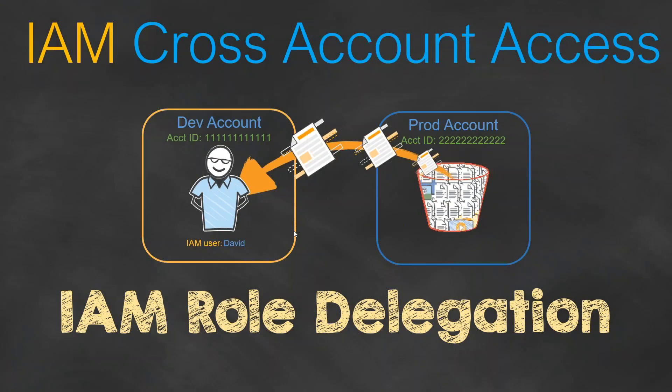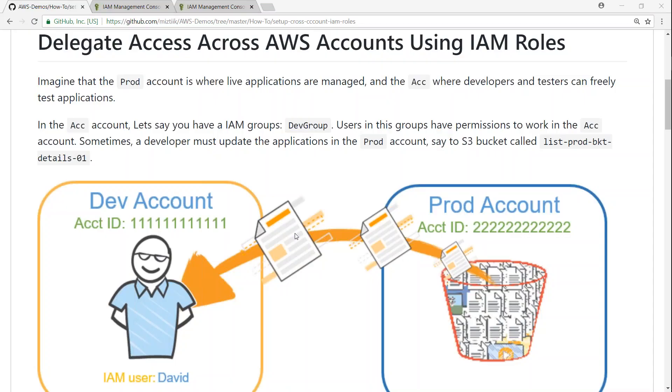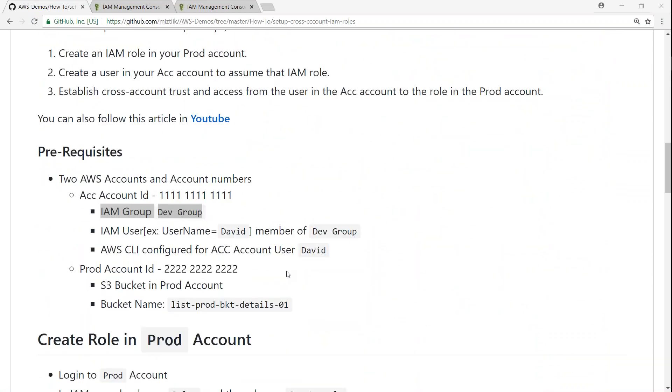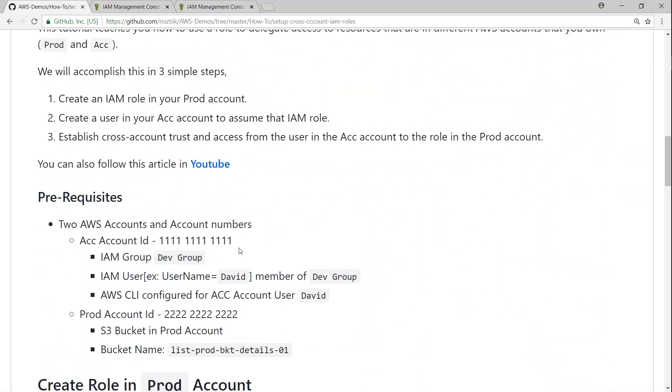Hello folks, we have been discussing how to provide access for one user in an account called the dev account or an acceptance account to a bucket which is in another account. In our use case it is going to be a production account. I have written a GitHub article - let us go ahead and see what steps are required to implement this cross-account access.